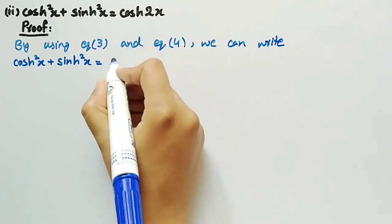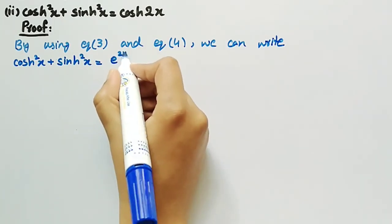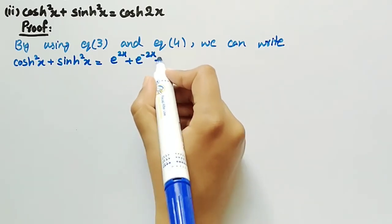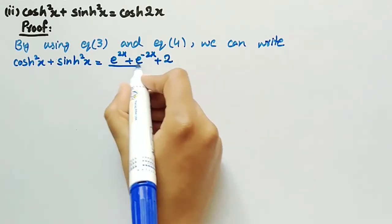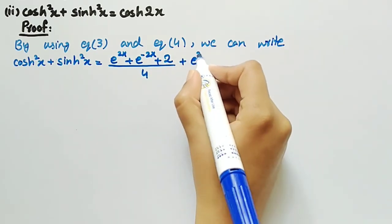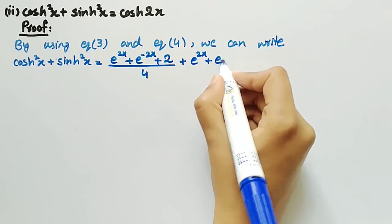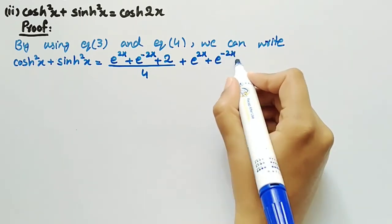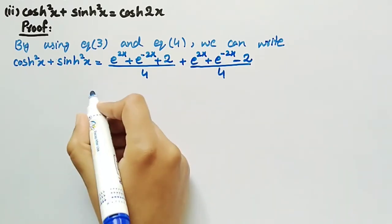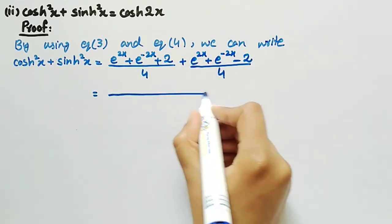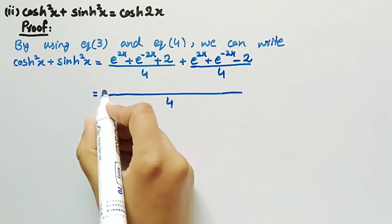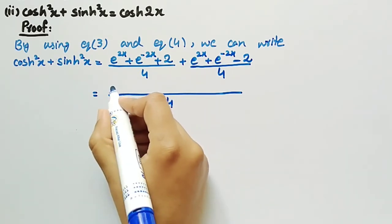cosh²(x) plus sinh²(x): cosh²(x) equals (e^(2x) plus e^(−2x) plus 2) divided by 4, plus sinh²(x) equals (e^(2x) plus e^(−2x) minus 2) divided by 4. Now by taking LCM, we write 4 in the denominator.